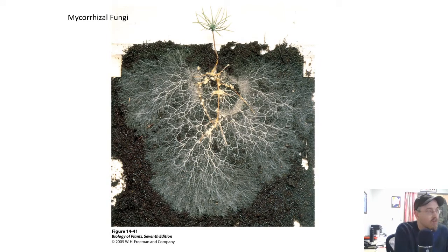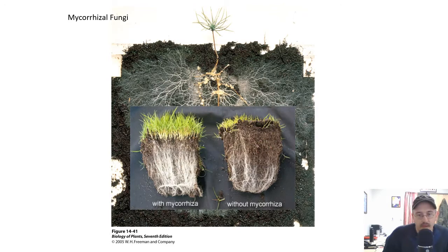Fungi also form mycorrhizal associations with roots, increasing the surface area of roots. Look at all that surface area of that little tiny pine tree — those fuzzy edges are fungal hyphae, increasing the surface area and allowing that root to absorb a lot more water and minerals than it could on its own. Grass grown with mycorrhizal fungi looks healthy, while grass in soil where the fungus was neutralized and destroyed looks stunted. Those mycorrhizae have a huge impact on the health of plants. In fact, some of the earliest plants that invaded land have mycorrhizal fungi associated with them — this is an ancient relationship.